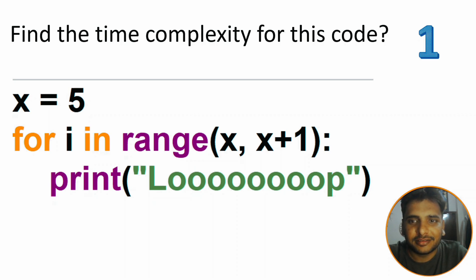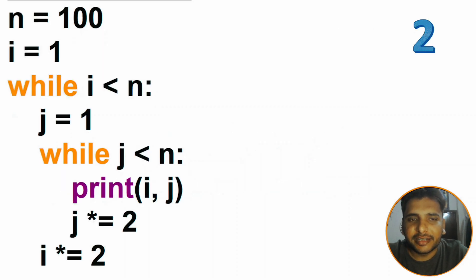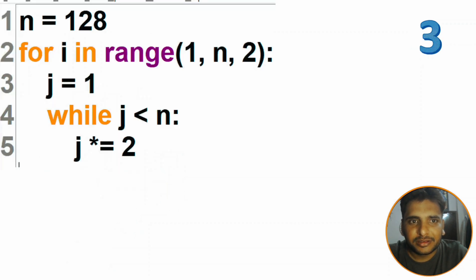Second one: it is a nested loop. You have to try this. J is depending on n and i is also depending on n. Third one: in this also J is depending on n. It is a nested loop, so try to check what is the complexity of this code also.